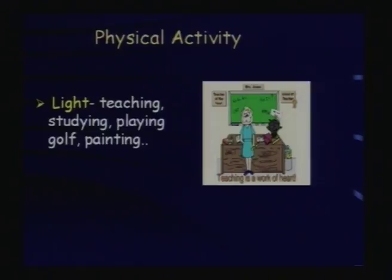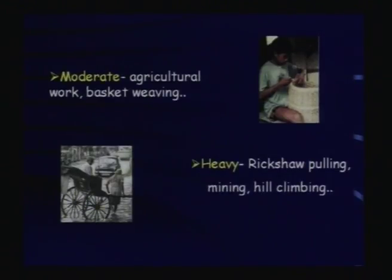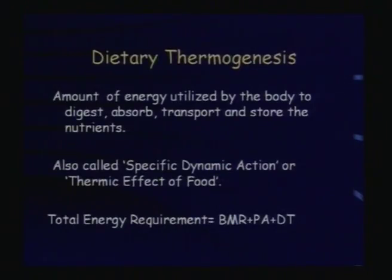Physical activity is of three kinds: light (like teaching and studying), moderate (like agricultural work and basket weaving), and heavy (like rickshaw pullers, miners, and hill climbers). We must consume energy according to our needs. If a light worker consumes energy requirements meant for a heavy worker, they will gain weight. The third aspect of energy is dietary thermogenesis — the energy utilized by our body to digest, absorb, transport, and store nutrients. This is also called specific dynamic action or thermic effect of food. Total energy requirement equals BMR plus physical activity plus dietary thermogenesis.